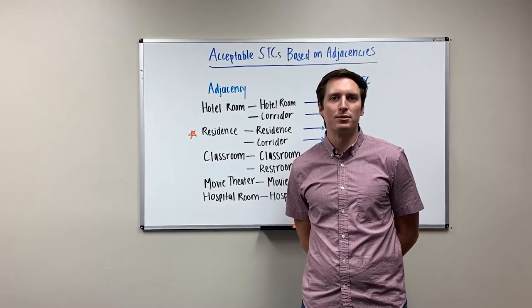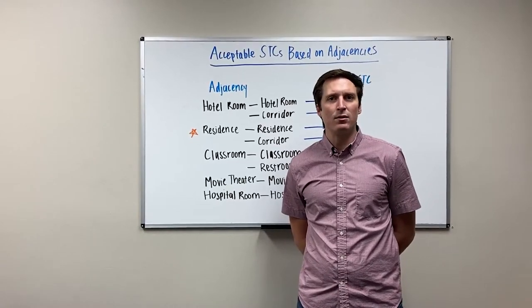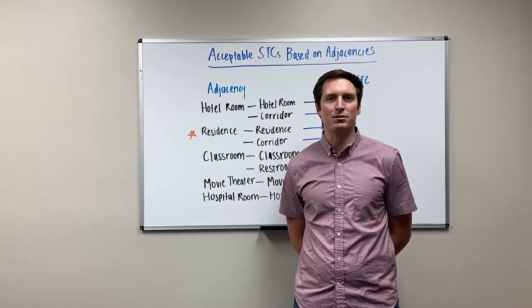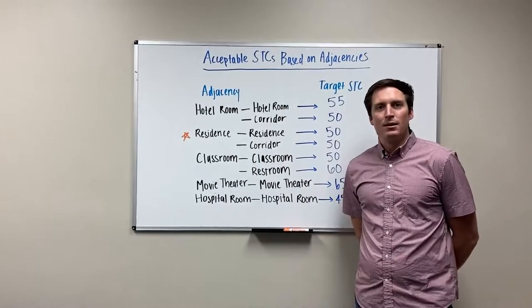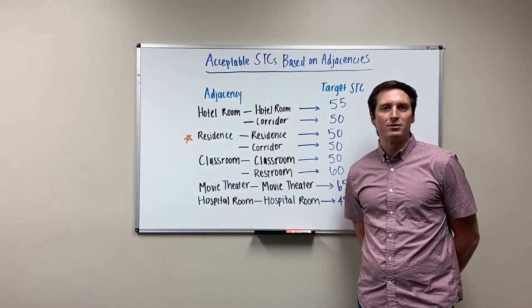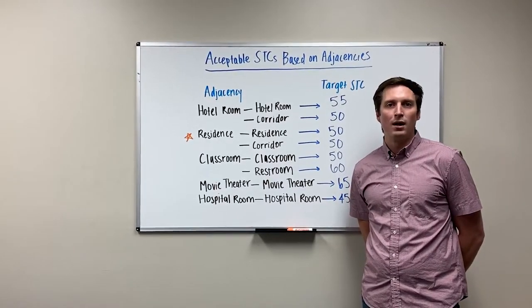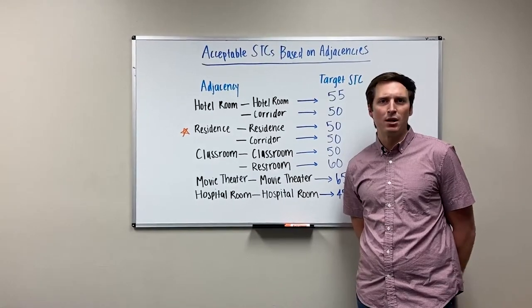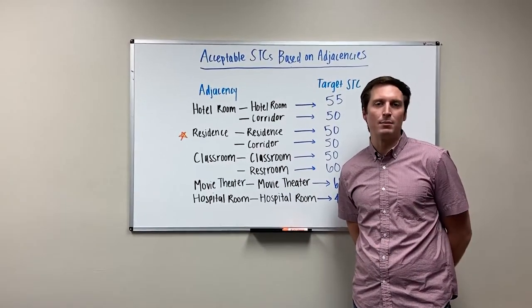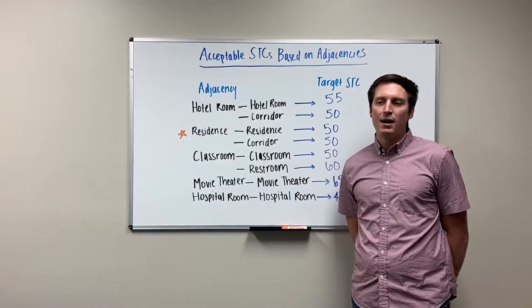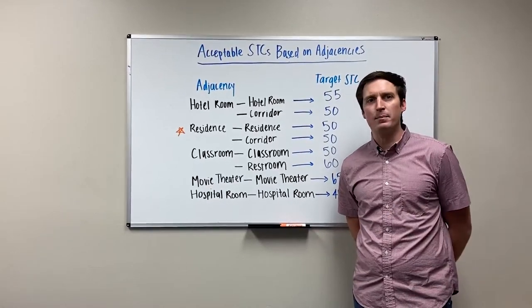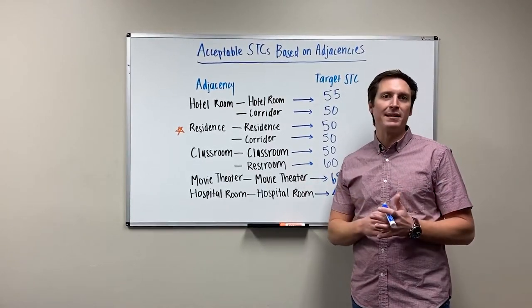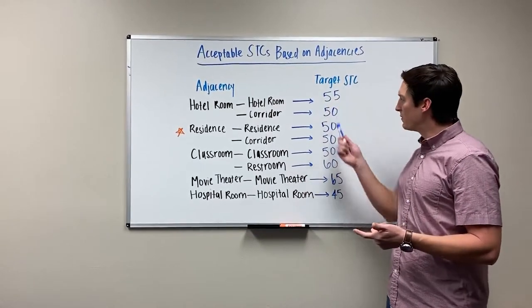Hey guys, Walker here with Commercial Acoustics. This is our third video in the educational series on soundproofing, and today we're going to talk about target STCs on your project. In previous videos we talked about how to improve the STC of your wall. STC, as a reminder, is your Sound Transmission Classification — essentially how many decibels your wall blocks. But different walls need to block different amounts of sound.